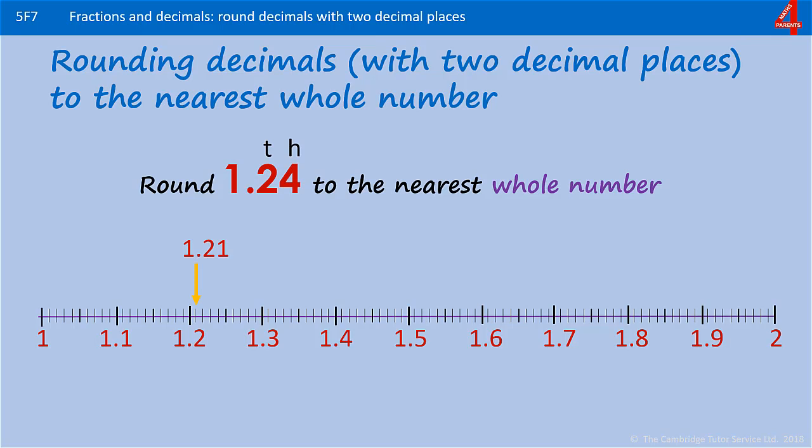One whole one, two tenths and one hundredth, and as it moves each place it goes up another hundredth so it becomes 1.22, 1.23 and then 1.24. If you look at the whole numbers either side of that you have 1 and 2, and you can see that where that arrow is, 1.24, the nearest whole number is 1.